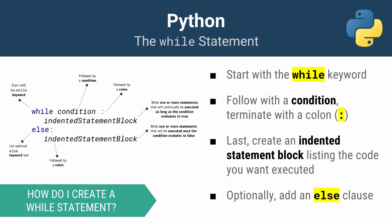Let's take a closer look at the anatomy of the while statement. You start with the while keyword, write a condition followed by a colon, then give it an indented statement block with the code you want to execute as long as the condition evaluates to true. Remember, this indented statement block will execute over and over again. You can also add an optional else clause whose indented statement block executes once the while loop is over.